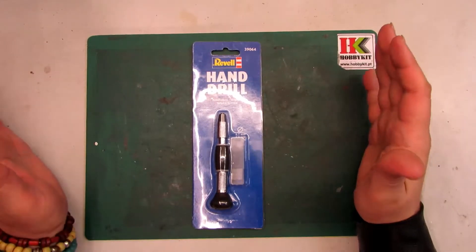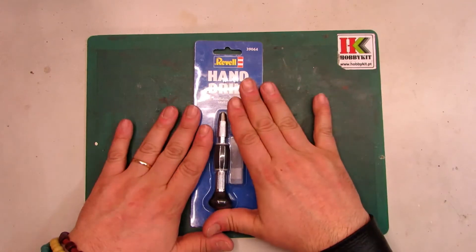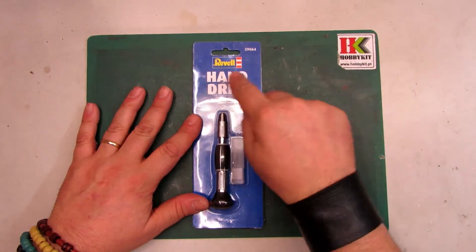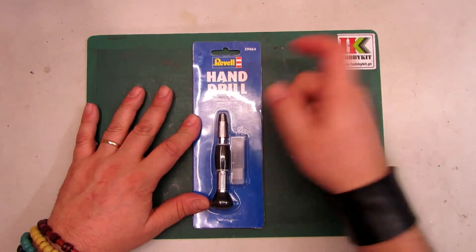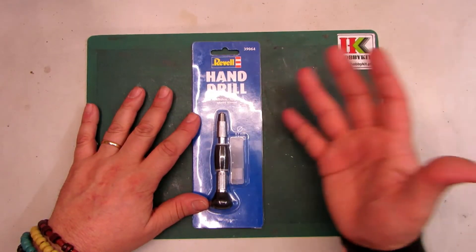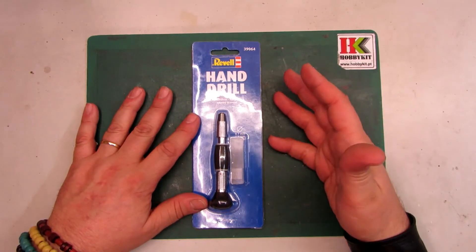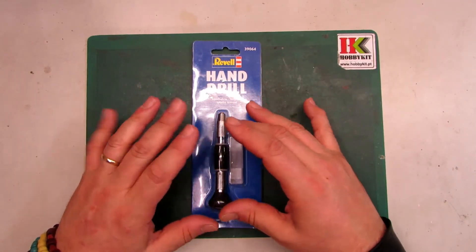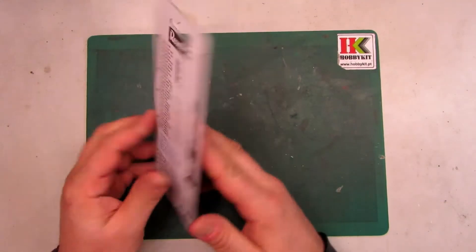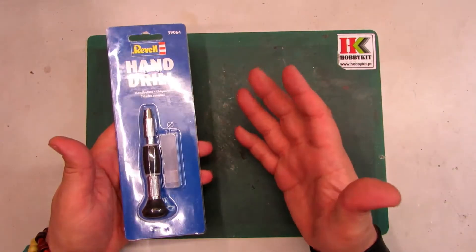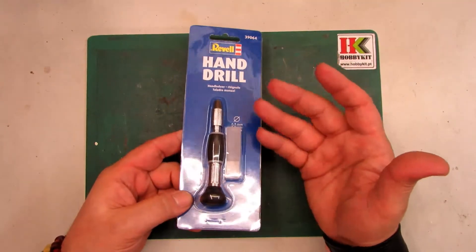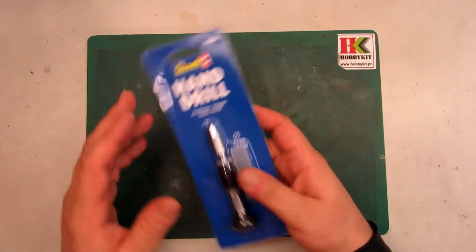Now it's another hand tool, it's the hand drill from Revell with the number 39064. I saw this at the store where I buy my things. I know this is very nice because I saw some guys using this, so I want to show you guys what you can expect for this and what this has to bring. This kit is not cheap and the construction of this I think is great.